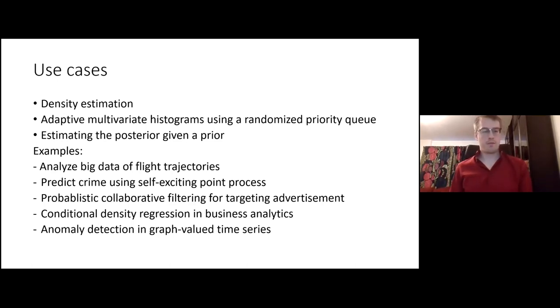It's frequently used in the literature for density estimation, such as marginal density, conditional density. You can slice it and such. Rasesh told me that there is a master student right now that works with fraud in banks, for example. I think that uses the density estimation. You can also use adaptive multivariate histograms using a randomized priority queue. This randomized priority queue is used in many papers as well. And you can estimate the posterior given a prior.